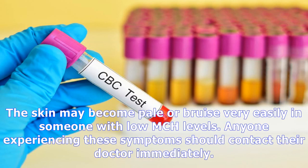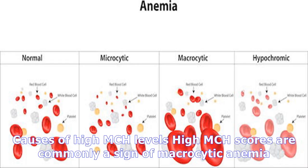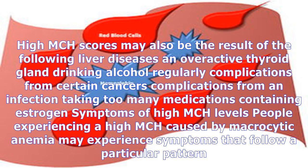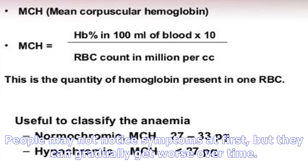High MCH scores are commonly a sign of macrocytic anemia, a condition that occurs when the blood cells are too big, which can result from not having enough vitamin B12 or folic acid in the body. High MCH scores may also result from liver diseases, an overactive thyroid gland, regular alcohol consumption, complications from certain cancers or infections, or taking too many medications containing estrogen.